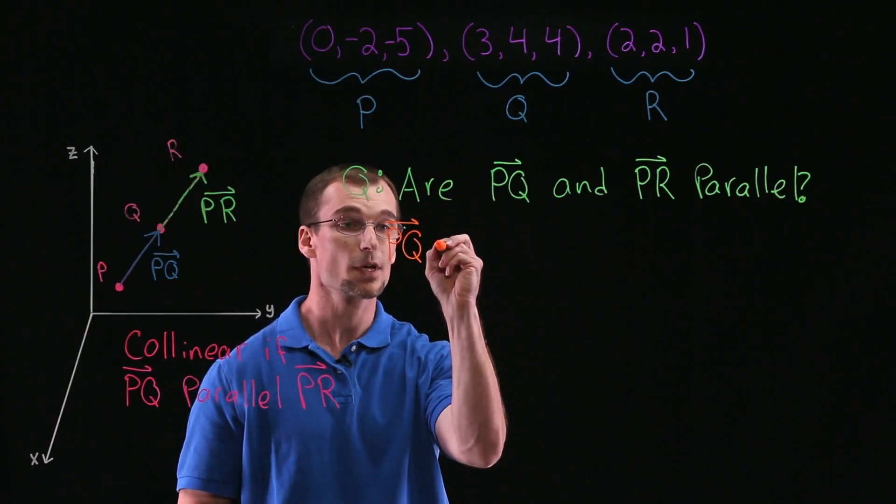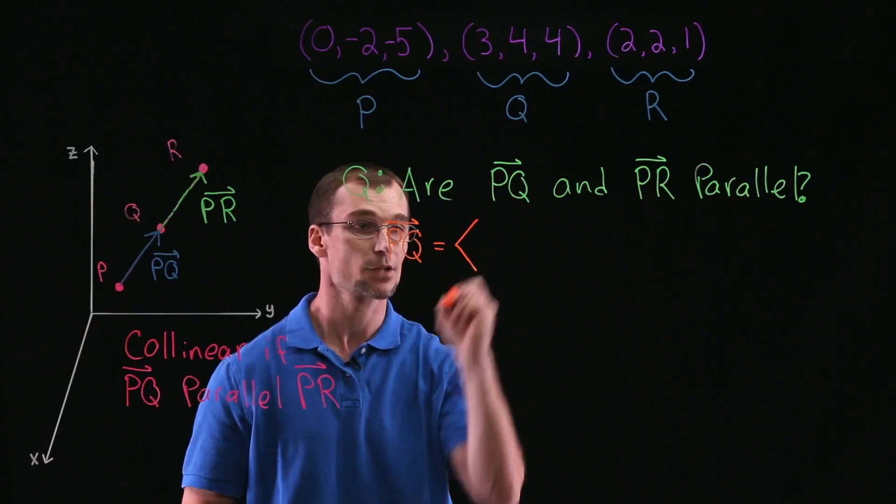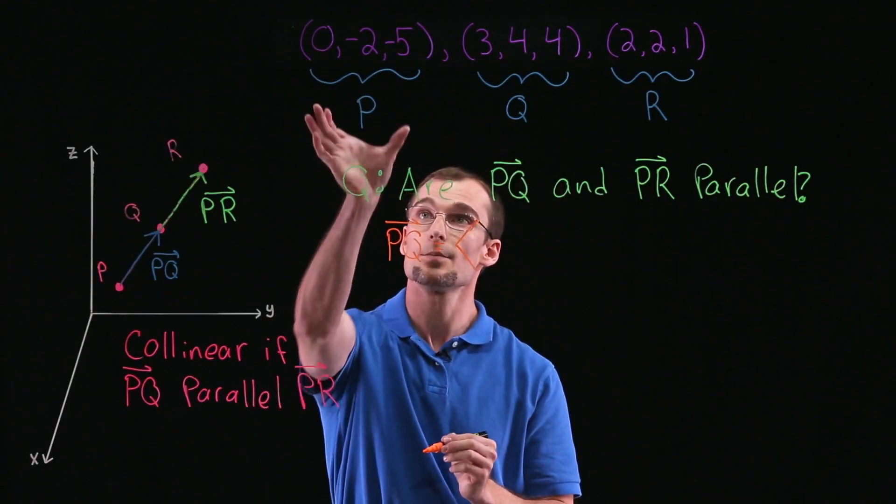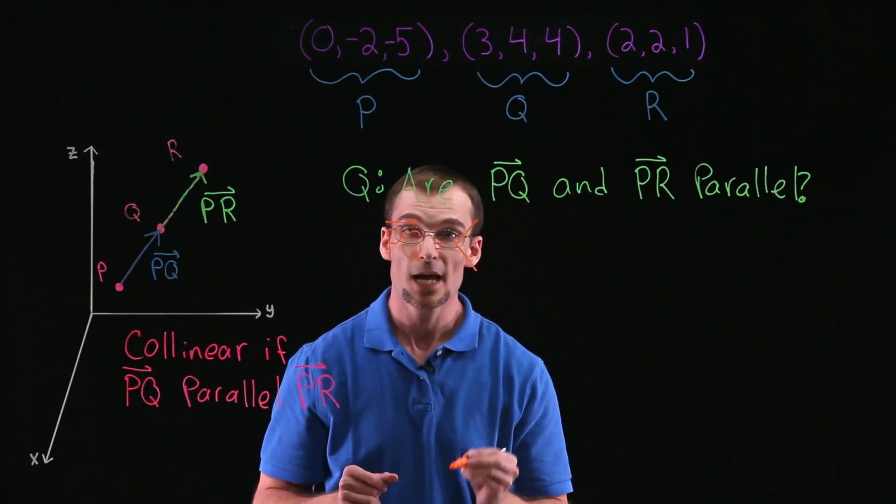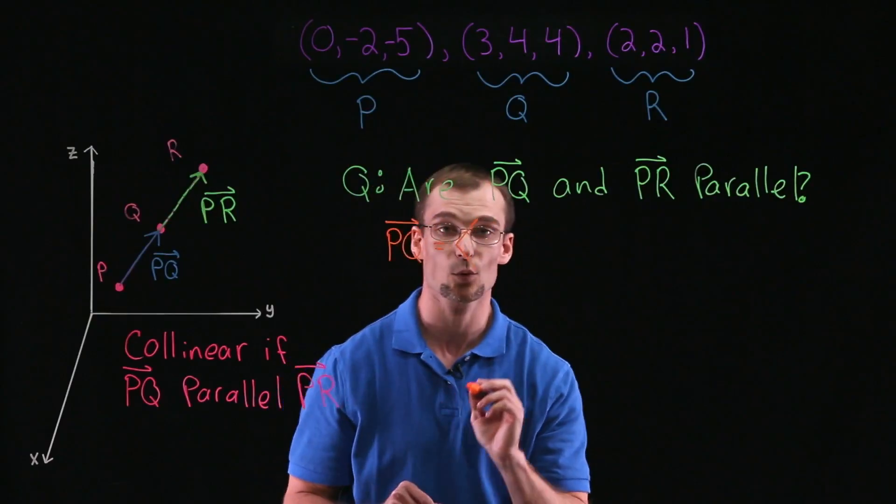So we're going to find this vector, and we're going to find this in component form. So finding a vector in component form, again, is taking the two points, or we're treating P as the initial point, Q as our terminal point, and then subtracting component-wise, where it's the terminal point minus the initial point.